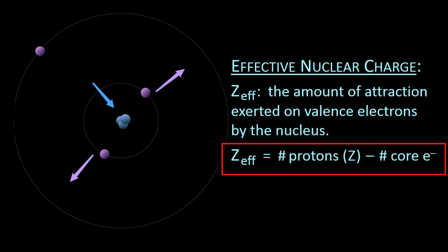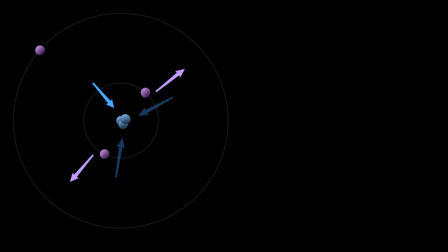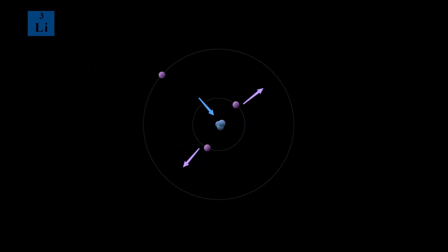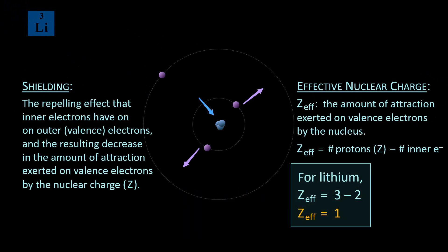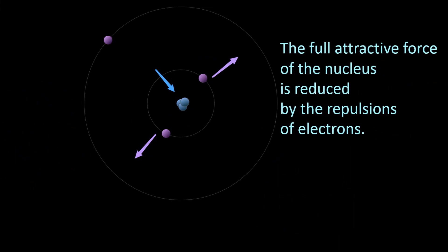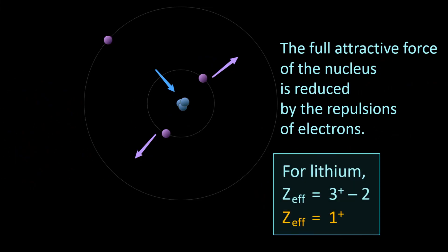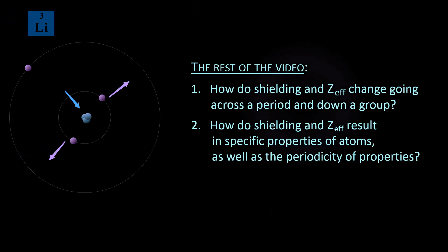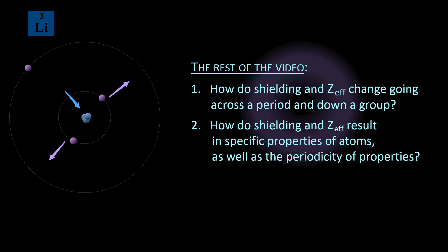Due to these considerations, it is reasonable to approximate S as simply the number of core electrons. Zeff is approximated by subtracting the number of core electrons from the number of protons — just as we removed attracting arrows equal to the number of repelling arrows. For lithium, Zeff is 1: 3 protons minus 2 core electrons. The effective nuclear charge Zeff is often represented with a plus sign since it shows the net attraction of the nucleus. In the remainder of the video, we will look at how shielding and Zeff change going across a period and down a group, and how these forces result in specific atomic properties and periodic trends.